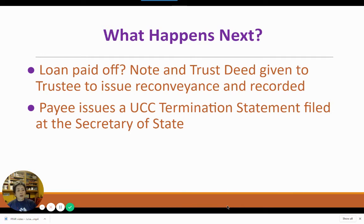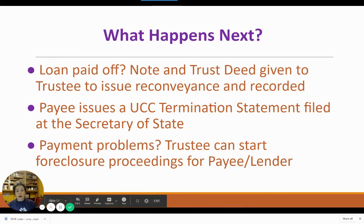When the loan is paid off, the note and the trust deed are given to the trustee to issue the reconveyance, and then this reconveyance is also recorded. The payee will also issue a UCC termination statement and file that at the Secretary of State's office. If the borrower does not pay the loan, the role of the third-party trustee becomes very important — this is where the power of sale rights come into play. With notification from the payee, the trustee will then have the right to sell the property in a foreclosure so that the lender can get their money back.